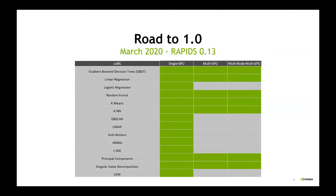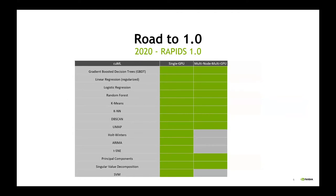This is the status of our algorithms today. Like Nick mentioned earlier, we'll see a couple of those — like linear regression, logistic regression, and UMAP. Some of them, like linear regression and random forest, currently run on multi-GPU and multi-node, but some of the others we're in the process of extending to multi-node, multi-GPU. This is the roadmap as we get closer to 1.0.